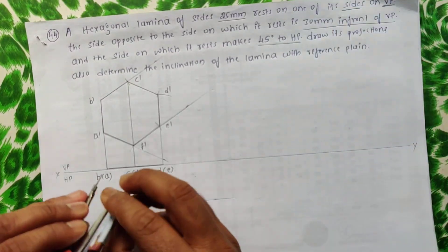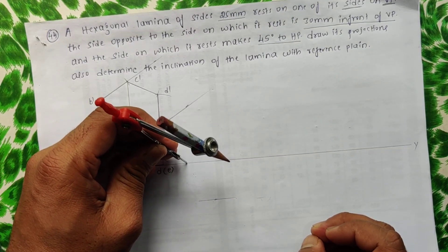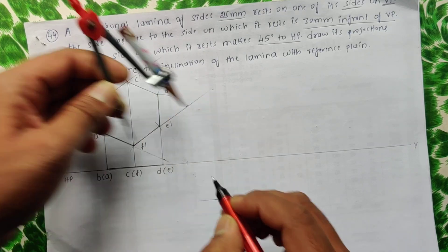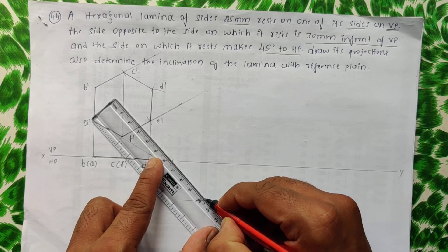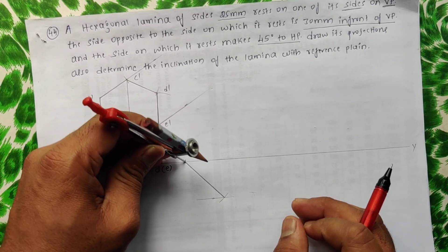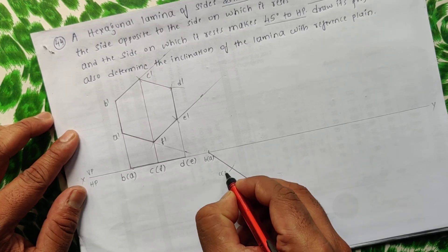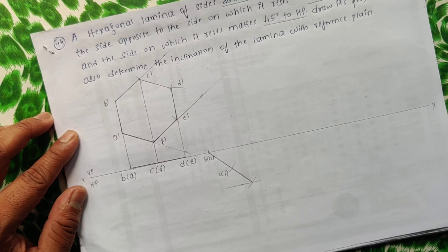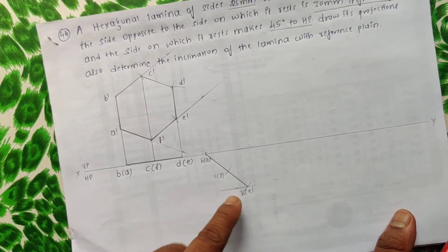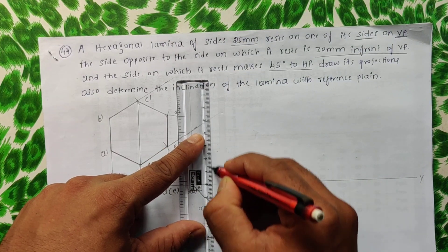Now measure the distance v of a to d of e — keeping the compass anywhere on this line, cut an arc on the marked line. This mark is important, so now join this. The given condition is satisfied. Now take v of a to c-f separately and cut one separate arc. Name it: v of a, c of f, and at last v of e. We got this wave, so now project it upwards to get the next view.